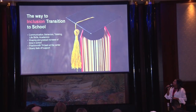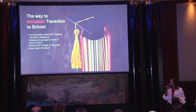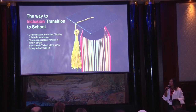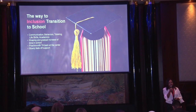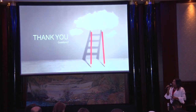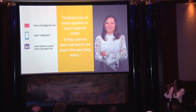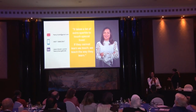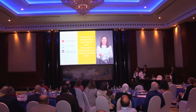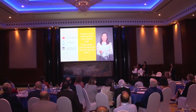We also have a pathway to inclusion and transition to schools. Once we see that a child has reached a certain level, we help them move to schools. We go with them — starting with 10 minutes — see what skills they need, what skills they lack, how we work on it, come back to the centre, work on those skills, and help them move towards independence. Thank you. I'll leave you with just this one thought: it takes a lot of extra sparkle to touch little lives, and if they cannot learn the way we teach, we teach the way they learn. Thank you very much and have a lovely rest of your day.